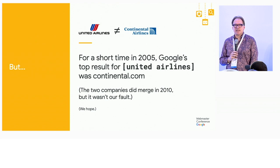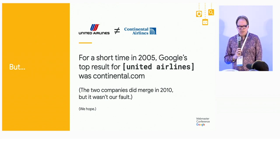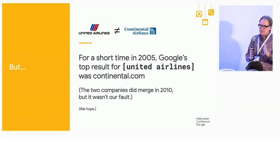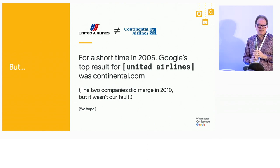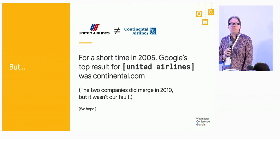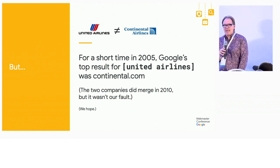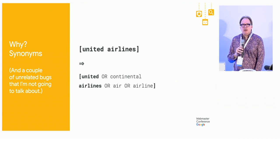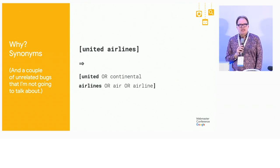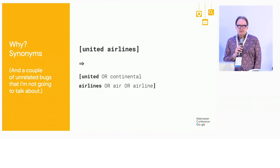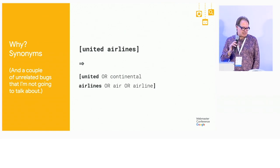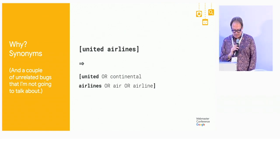This led to one of the bugs. In 2005, the top result for [United Airlines] was Continental.com. Before people say 'didn't they merge?' — yes, they merged in 2010, and we really hope it wasn't our fault. There were a number of bugs involved, but the big one was that we were actually rewriting 'United Airlines' as 'United OR Continental, Airlines OR air OR airline.' There were some other things that removed safeguards — those were my fault — but the synonym system bug was not my fault.